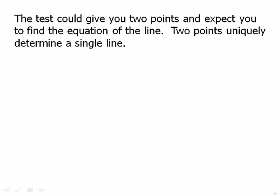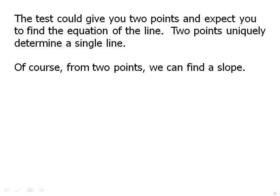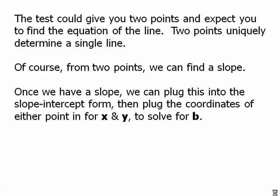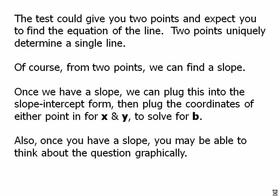The test could give you two points and expect you to find the equation of the line. Two points uniquely determine a single line. From the two points, we can always find a slope. Once we have the slope, we plug either one of those points in for x and y in the equation, plug the slope in, solve for b, and then we have full slope-intercept form. Once you have the slope, you may also be able to think about the question graphically.